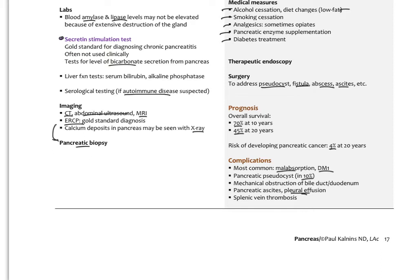With both acute and chronic pancreatitis, the herbal therapies discussed for functional deficient and excess exocrine states — stimulant or sedative bitters — may be used adjunctively. Patients with chronic pancreatitis can respond to some degree to stimulant bitters, depending on how much destruction has occurred in the pancreas.